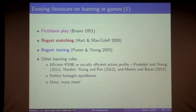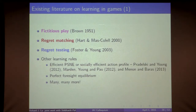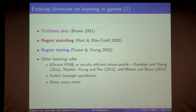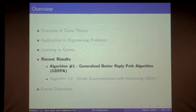Briefly, three well-known learning rules: Fictitious play, the oldest, requires each agent to maintain beliefs about what others are doing and select an action optimal with respect to that belief. Regret matching and regret testing use regret — how much better an agent could have done using an action it did not play. There are also learning rules designed to find efficient pure strategy equilibria, socially efficient action profiles, and perfect foresight equilibria.